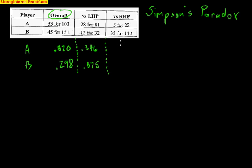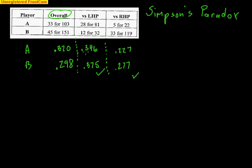How about right-handed pitchers? Player A was 5 for 22, and that's 0.227. Player B is 33 for 119, which is 0.277. Notice something weird here as well — Player B is better against left-handed pitchers and better against right-handed pitchers. Player A is worse, comparatively, against left-handers and right-handers. But overall, Player A is better.